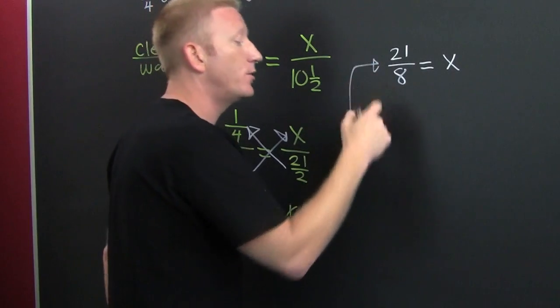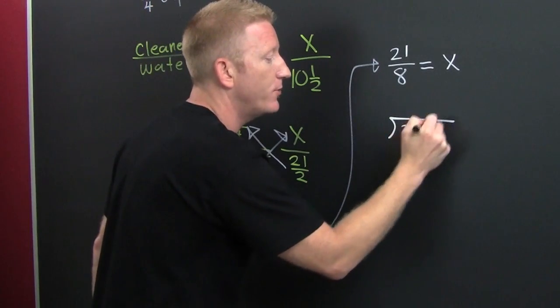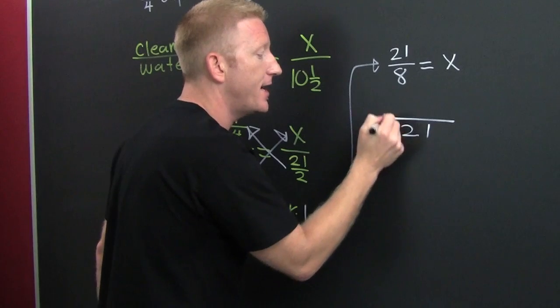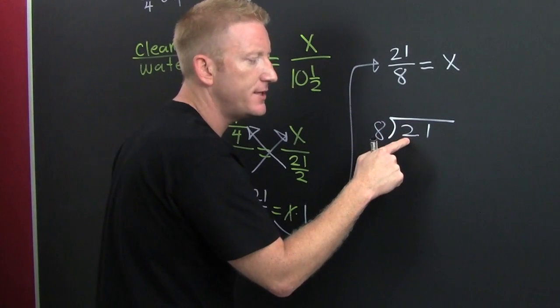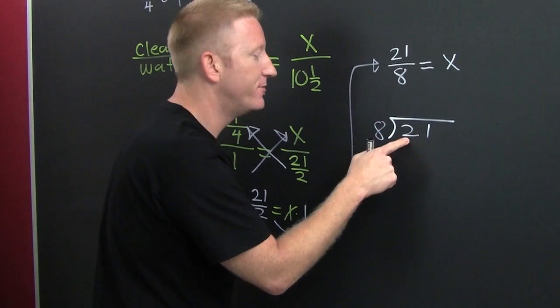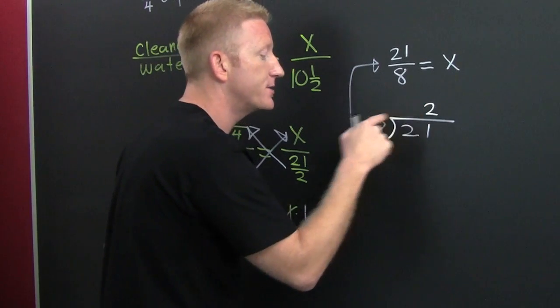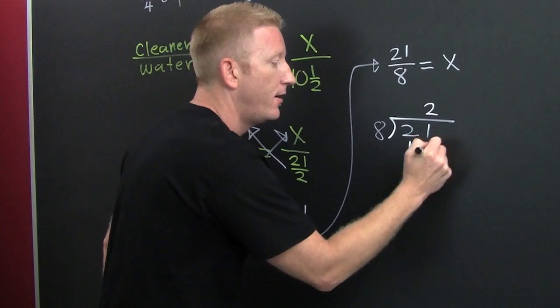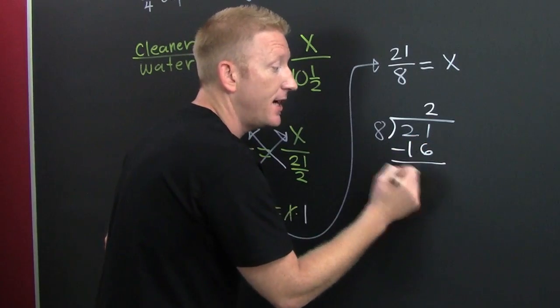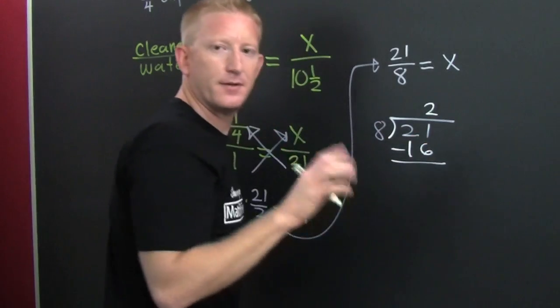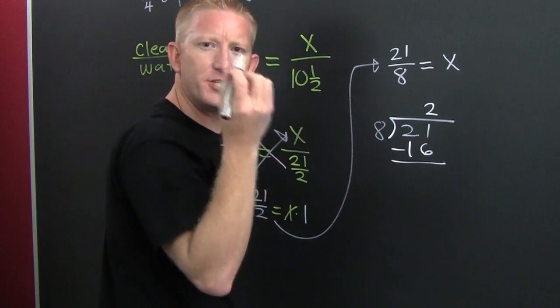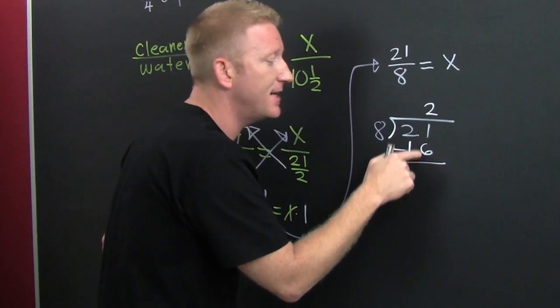So, we need to go old school. Put twenty-one in the house. Put eight out the house. Eight goes in there zero times. Move on. Eight goes into twenty-one not three, but two. This one times that one. Put it there. Sixteen. Change the sign. Too much chalk.